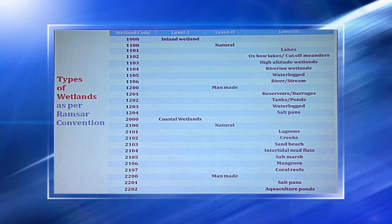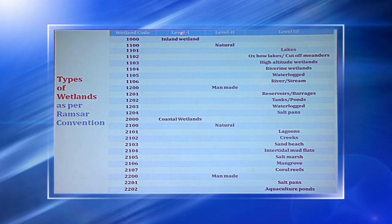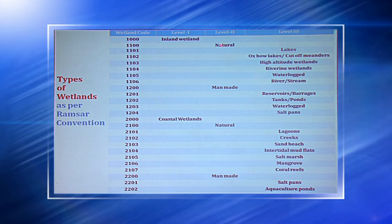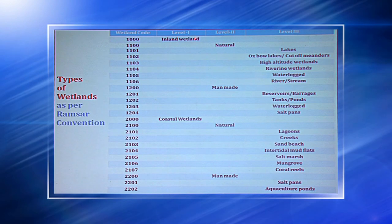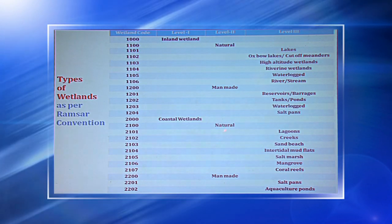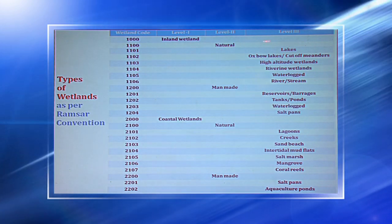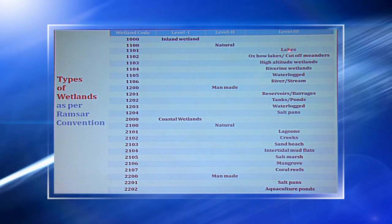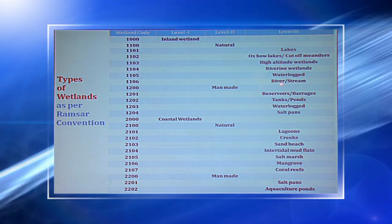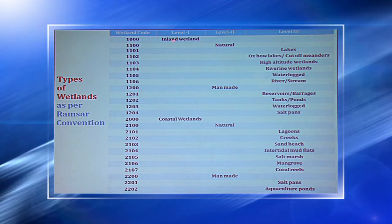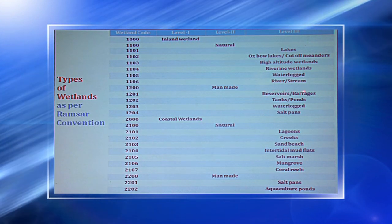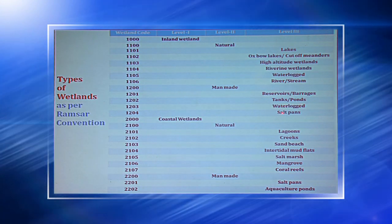As per the Ramsar Convention, wetlands have been divided at three levels. At the first level, there are inland wetlands and coastal wetlands. At level two, both inland and coastal wetlands are divided into natural and man-made categories. At level three, natural inland wetlands include lakes, oxbow lakes, cutoff meanders, high-altitude wetlands, riverine wetlands, waterlogged areas, rivers and streams. Man-made inland wetlands cover reservoirs, barrages, tanks, ponds, waterlogged areas, and salt pans.